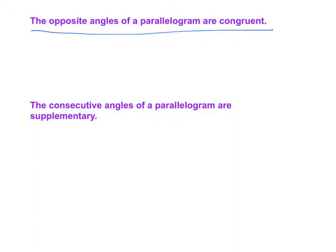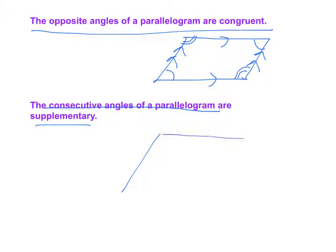The opposite angles of a parallelogram are congruent. That's pretty clear. If we have these parallel sides, then with that is going to come congruent angles here and here and then here and here. The consecutive angles of a parallelogram are supplementary. That's also pretty clear.